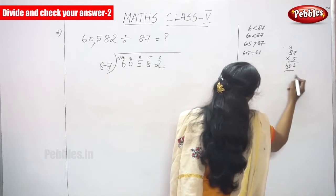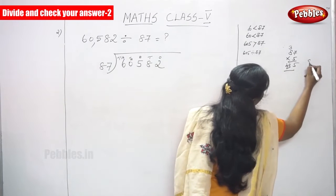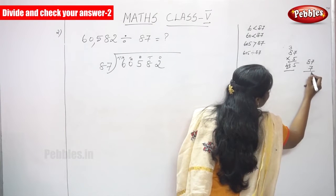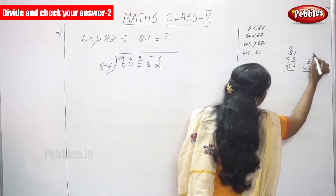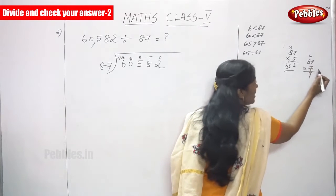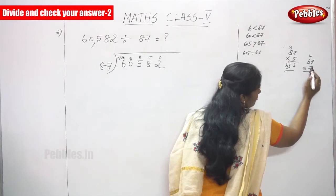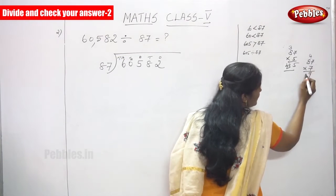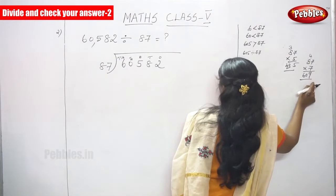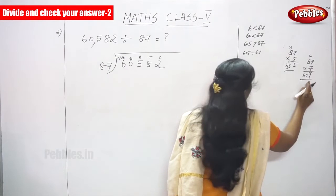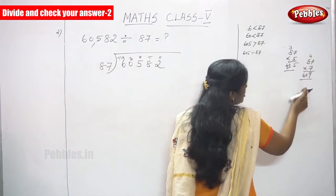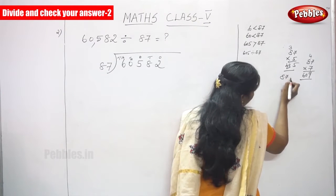So I will go for the next one. 87 multiplied by 7 times: 7 sevens are 49, the remainder goes to the top. 7 eights are 56, 56 plus 4 is 60. That is 609, not 605. But 609 is greater than 605, so we go for 6 times.